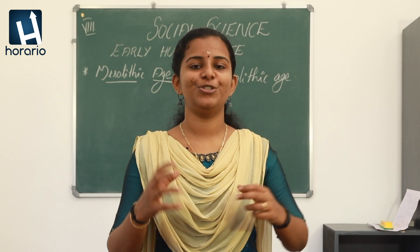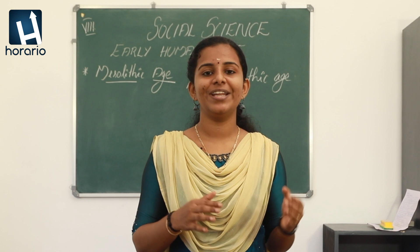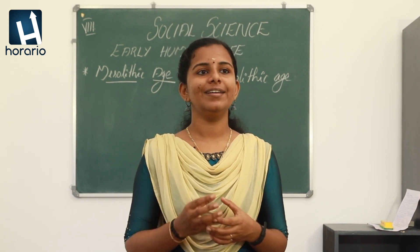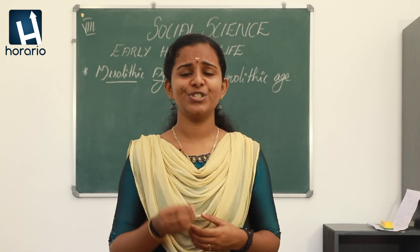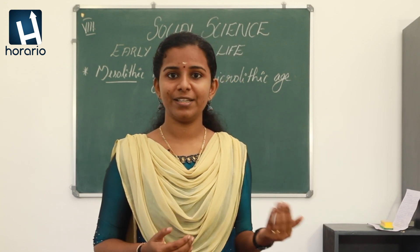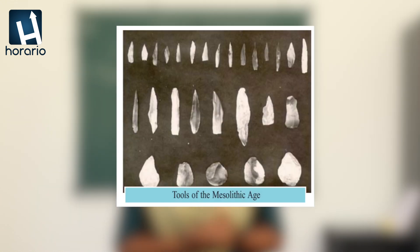Let's start with the Mesolithic age. The word 'meso' is a Greek word meaning 'middle,' and 'lithe' means 'stone.' So the Mesolithic age is the period between the Paleolithic age and the Neolithic age. In this period they used small, sharp, and pointed tools as weapons — micro stones — unlike the rough stones of the Paleolithic age. This period is otherwise known as the Microlithic age.